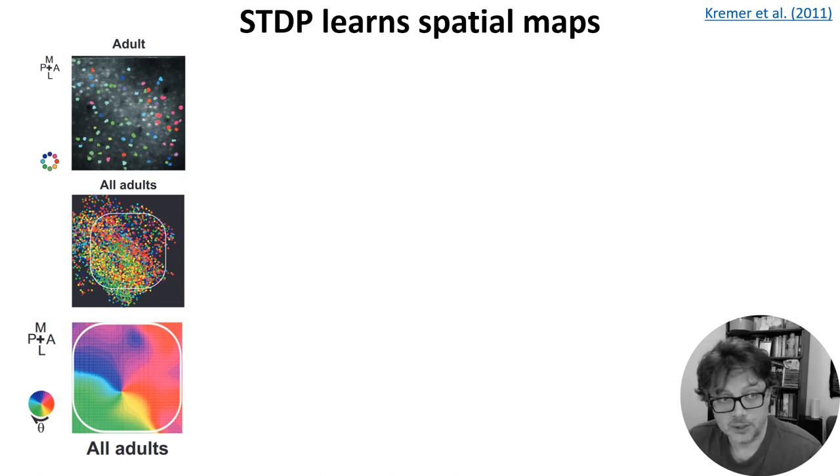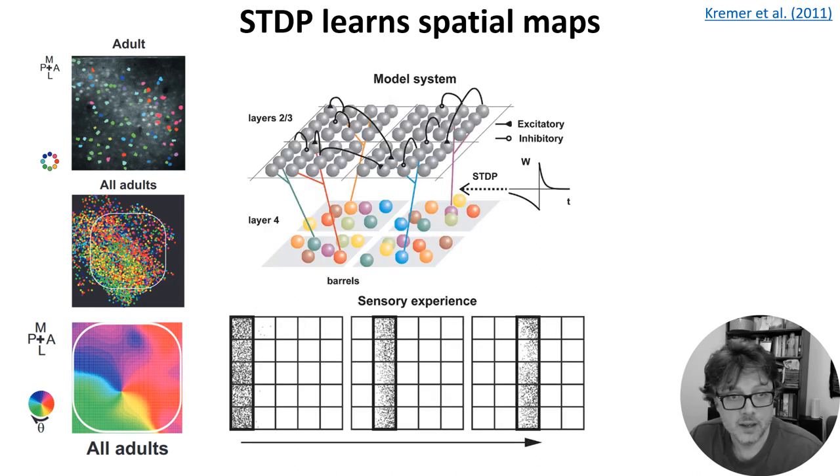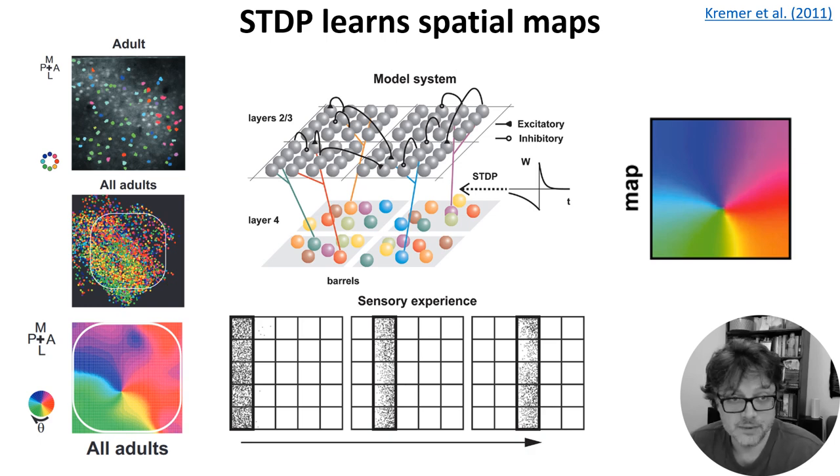In week two's videos on network models, we saw this example of a spatial map in the barrel cortex of the rat. As a reminder, that's the system that processes inputs from the rat's whiskers. What we saw is that these neurons have a preference for motion in a particular direction. And that preference has a spatial structure. To model this, we used a slightly more complicated setup than the previous studies designed to match the structure of layers two through four of the barrel cortex. The input stimuli were waves of activity that moved across the whiskers in a linear pattern with the direction chosen randomly each time. And this input structure together with the STDP synapses was enough for the model to learn a very similar input selectivity map to what was recorded in the rats.